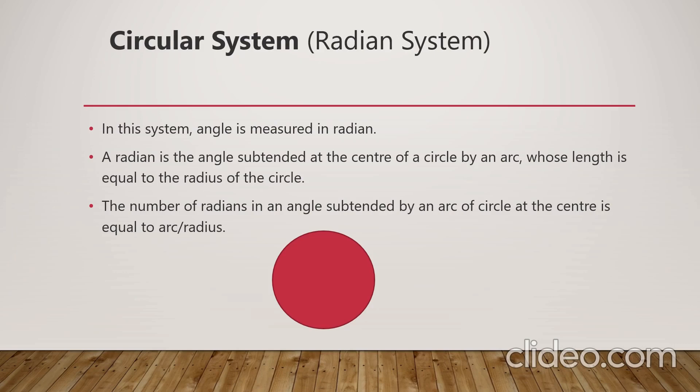Next is the radian system, that is circular system. In the circular system, you have a circle. If I make a sector, this is your angle theta, this is the radius, and this is the length of the arc. There is a relation between theta, L, and R. That is theta equals L upon R. In this system, you consider L and R in centimeters only, and your theta will be coming in radians.